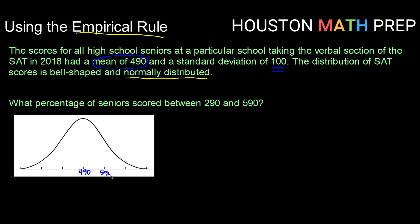590 would be one standard deviation above, 690 would be two above, and 790 would be three above. Going down, 390 would be one below, 290 would be two below, and 190 would be three below.